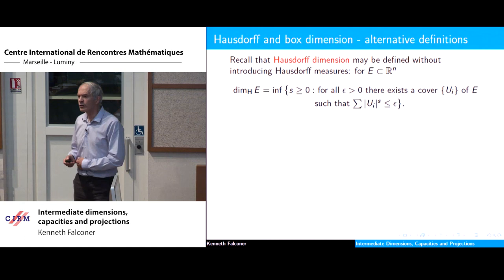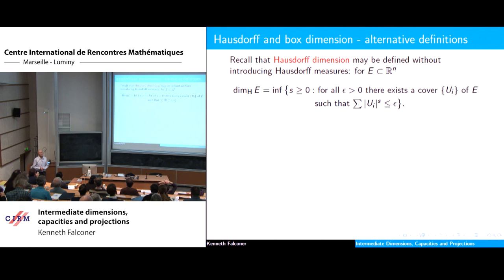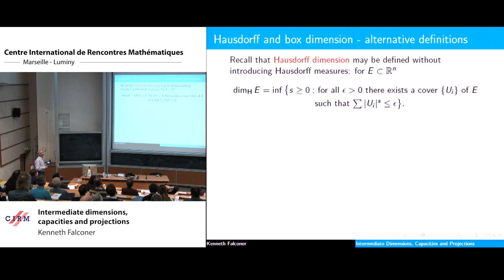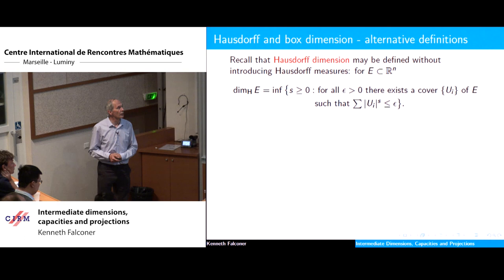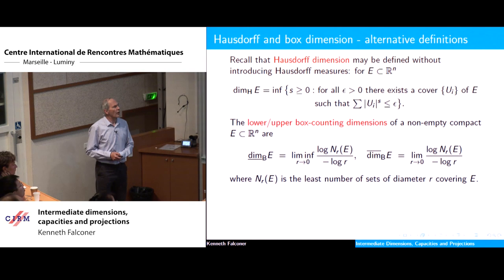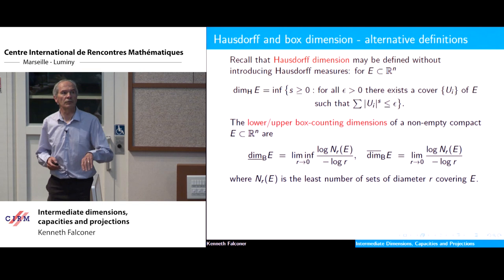The usual way of defining Hausdorff dimension is via Hausdorff measures — the Hausdorff dimension of a set is the critical value where the Hausdorff measure jumps from infinity to 0. But there is another way of defining Hausdorff dimension without going through Hausdorff measures: it's the smallest value of s such that for all positive epsilon you can find a cover of your set such that the sum of the s-powers of the diameters of your covering sets is less than or equal to epsilon. Throughout we assume that the sets are non-empty and compact so we don't have any problems with the definitions.